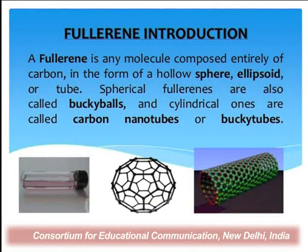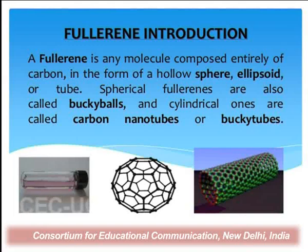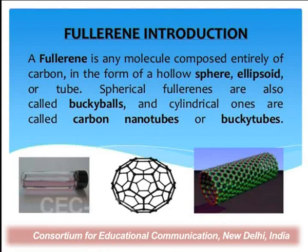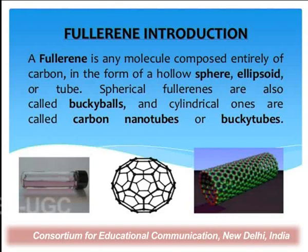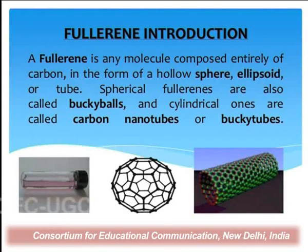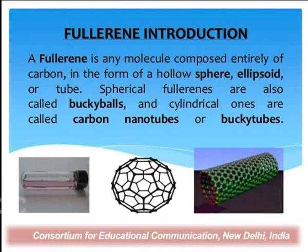Fullerene is made entirely of carbon atoms and they form a sphere, ellipsoid, and tube. The spherical structure forms the bucky ball. The ellipsoid structure forms C70, and the tubes form carbon nanotubes, also called bucky tubes. So fullerene is formed from carbon atoms in the form of sphere, ellipsoid, or tubes. The two most important are Buckminster Fullerene and carbon nanotubes.